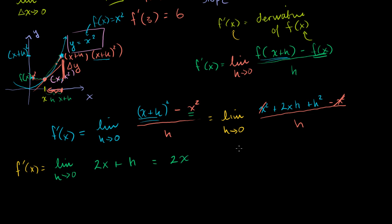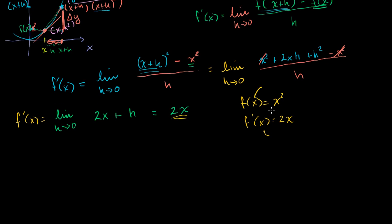So we just figured out that if f of x equals x squared, then f prime of x equals 2x. That's what we just figured out — and this is a big result, this is exciting. f of x gives you the value of the function at a point; f prime of x is going to tell you the slope at that point. It's a function that gives us the slope at any point of another function.